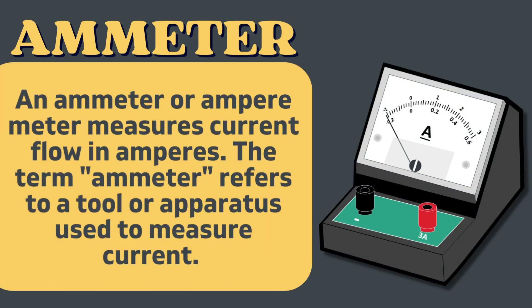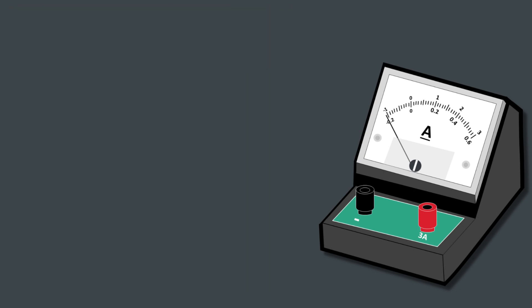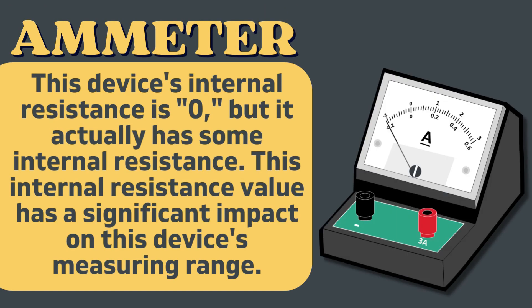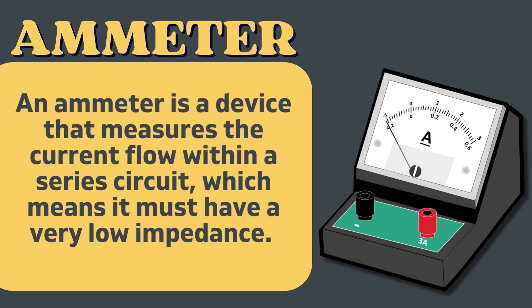An ammeter, or ampere meter, measures current flow in amperes. The term ammeter refers to a tool or apparatus used to measure current. This device's internal resistance is ideally zero, but it actually has some internal resistance, and this internal resistance value has a significant impact on the device's measuring range.